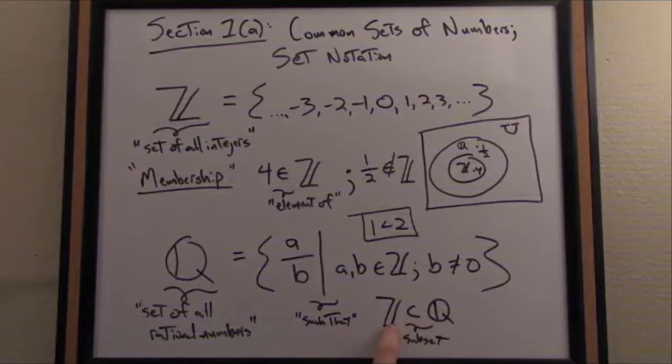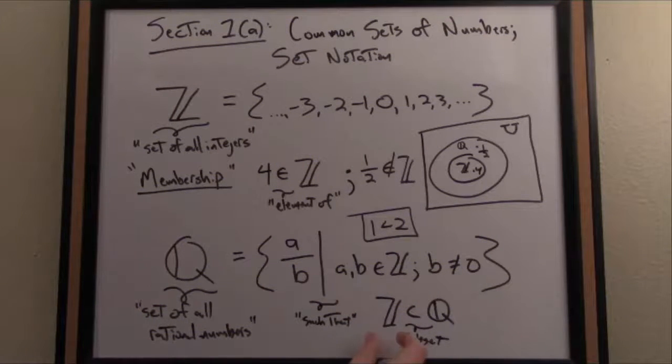This relation just means this set Z is contained, or smaller in a way, inside of Q. What we're going to do is build up a full sequence of the most common sets of numbers you'll ever encounter in any applied science field, beginning with Z and Q as our basis.